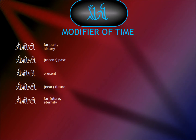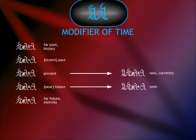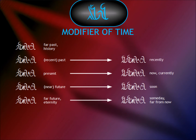The word 'hasta era' means the present. Therefore, the modifier 'ir hasta era' means 'now'. Similarly, 'hasta era' means the near future, and so the modifier 'ir hasta era' means 'soon'. 'Hasta ora' means the far future, or also eternity, and so 'ir hasta ora' means 'someday'. For the past, we get 'ir hasta era', which means 'recently', and 'ir hasta ara', which means 'a long time ago'.